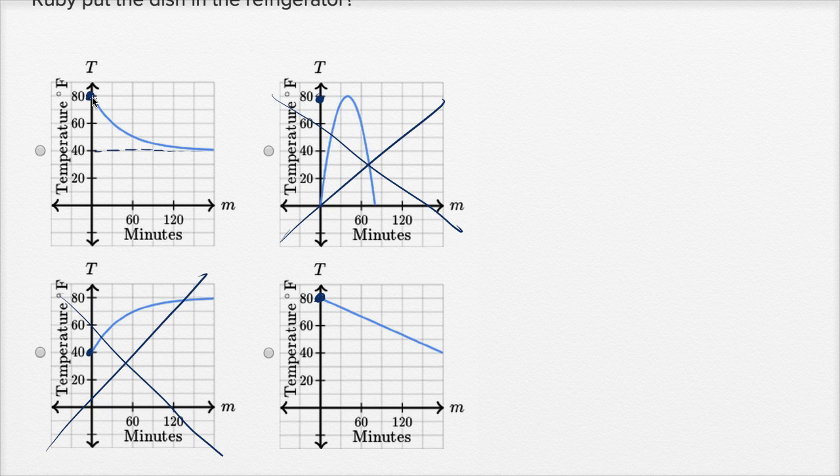The slope starts out quite negative, but it becomes less and less negative as we get closer and closer to 40 degrees Fahrenheit.